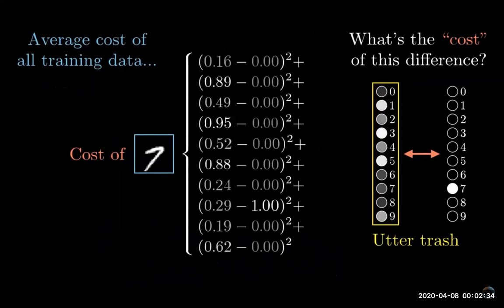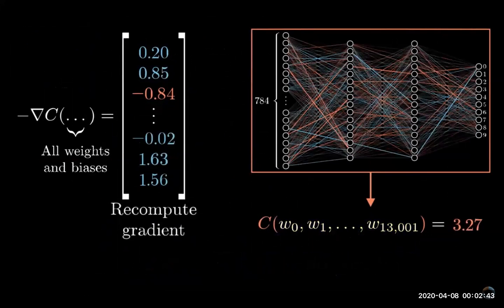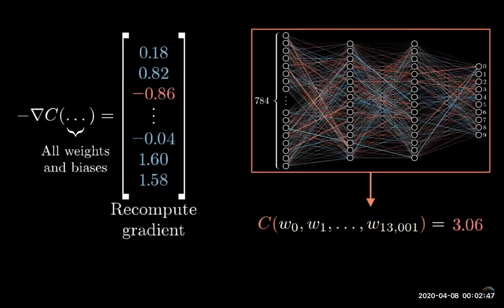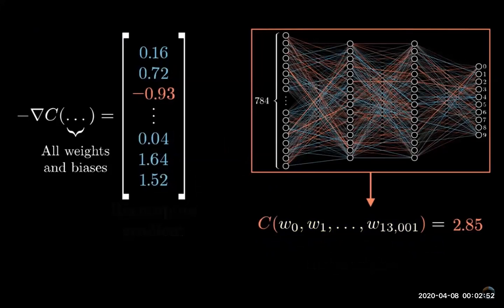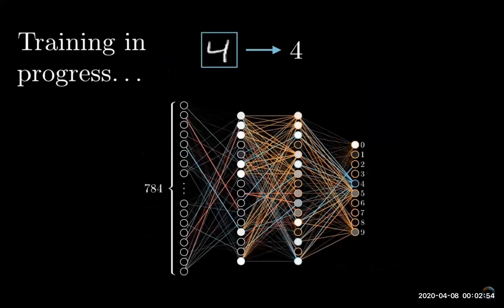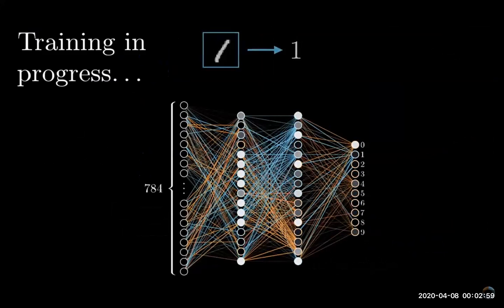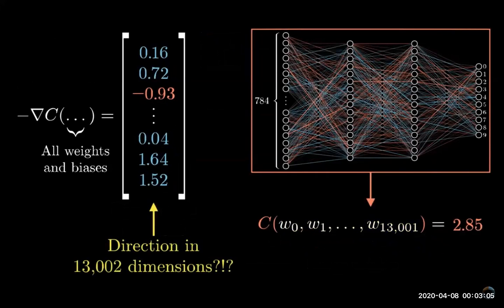Doing this for all your tens of thousands of training examples and averaging the results gives you the total cost of the network. The thing that we're looking for is the negative gradient of this cost function which tells you how you need to change all of the weights and biases to most efficiently decrease the cost.